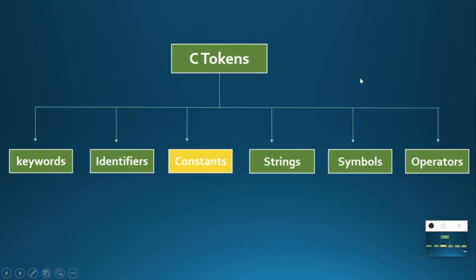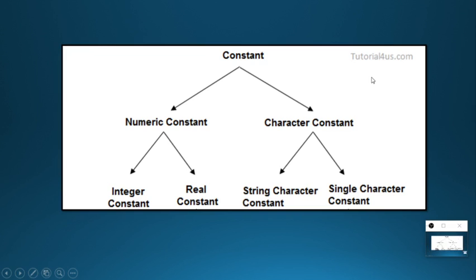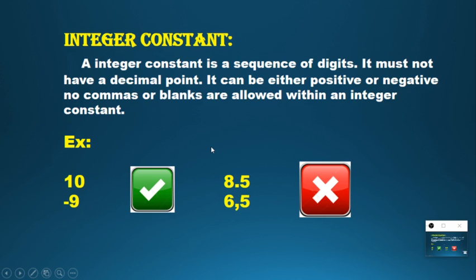Coming to the next token: constants. Constants contain two types — numeric constants and character constants. Numeric constants are further divided into integer constants and real constants. Character constants are divided into single characters and string characters. I will start with integer, then real, then string and single character.